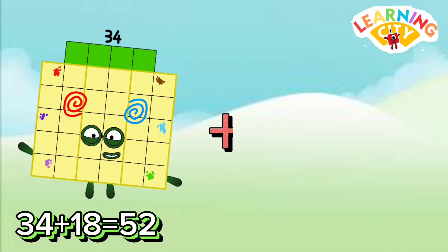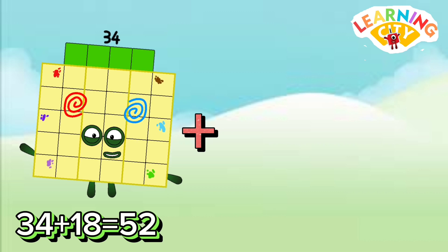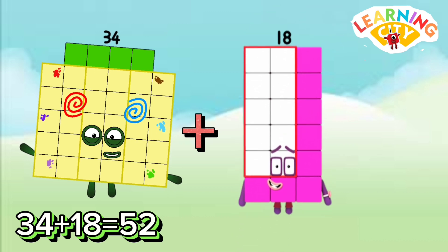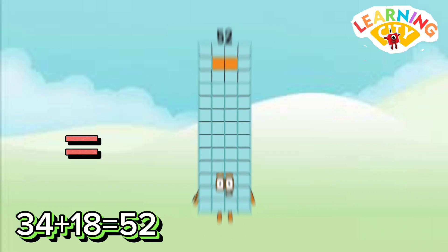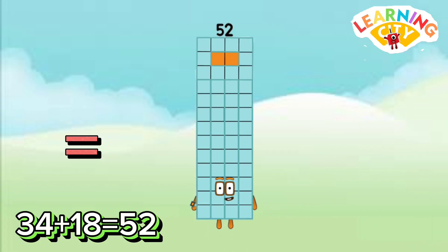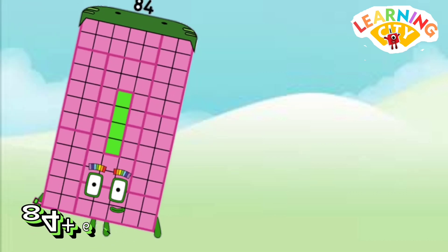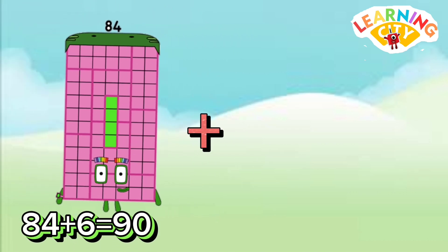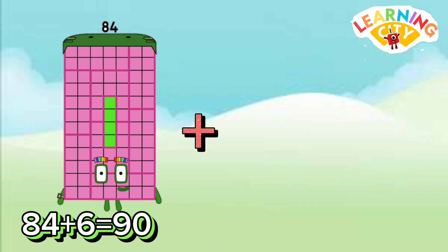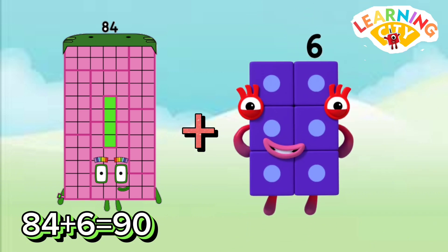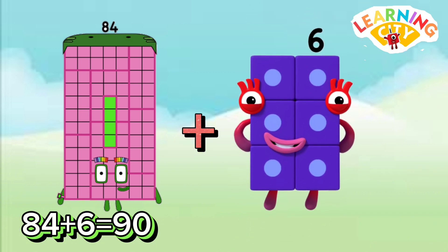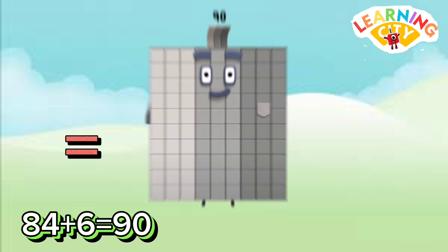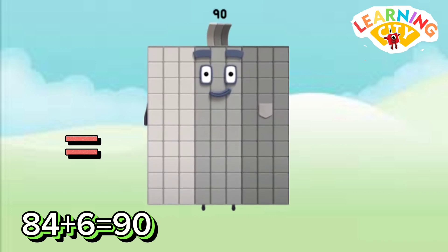34 plus 18 equals 52. 84 plus 6 equals 90.